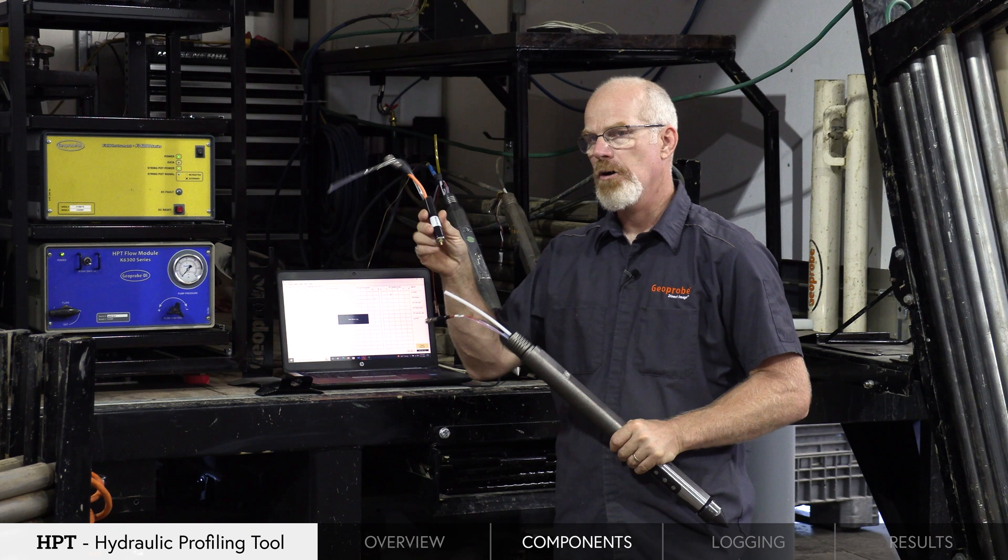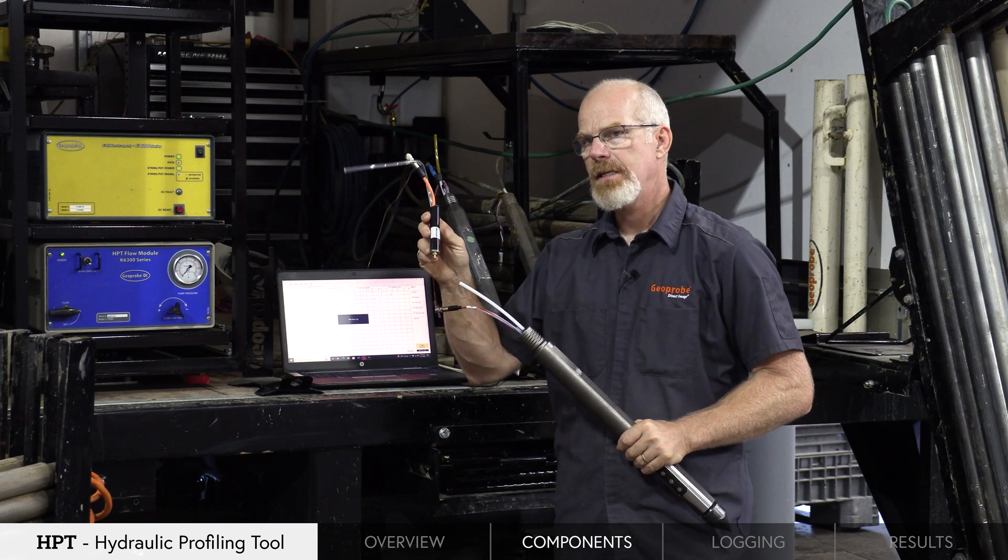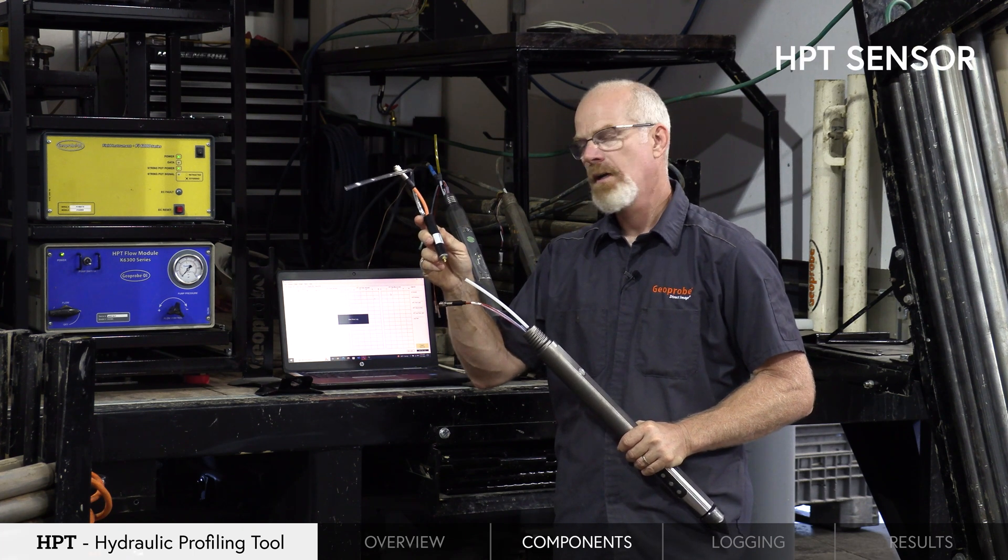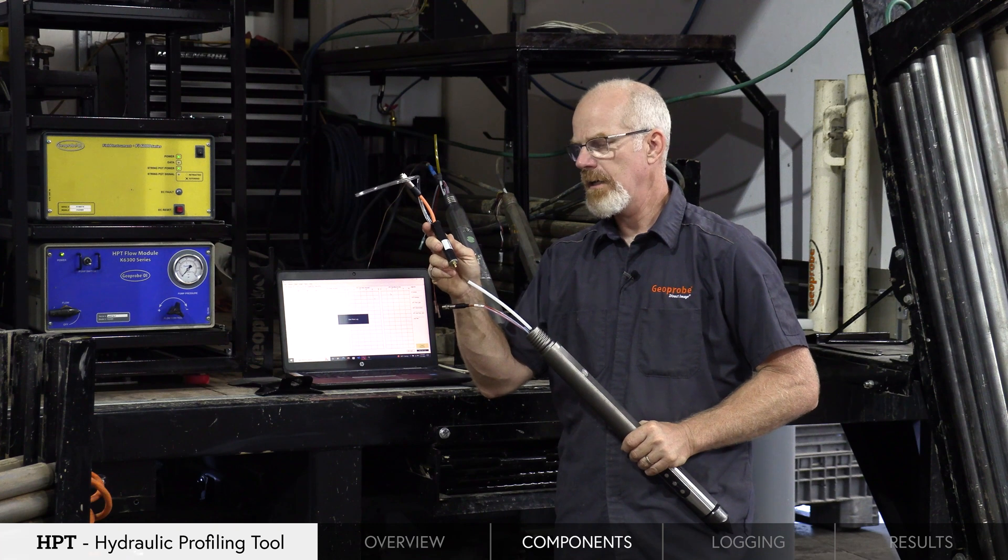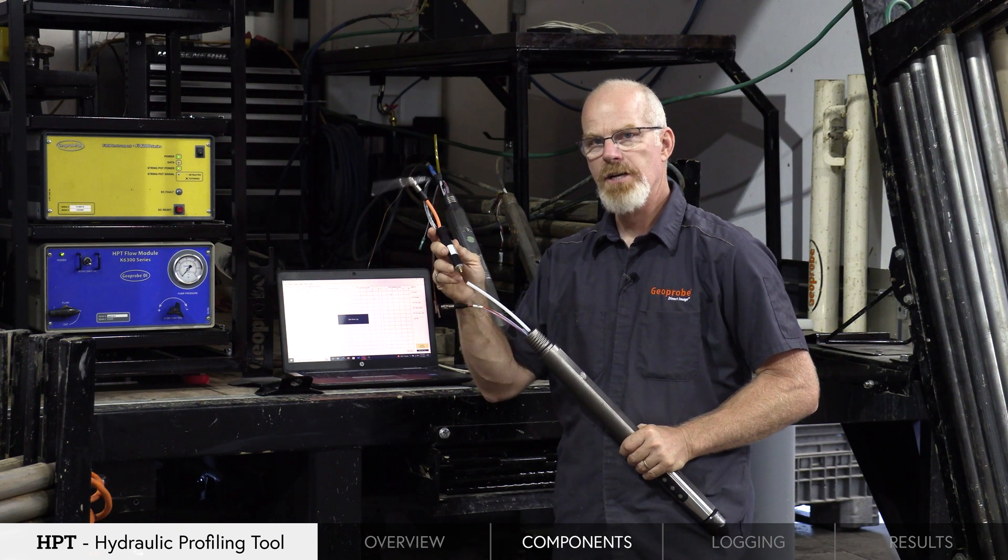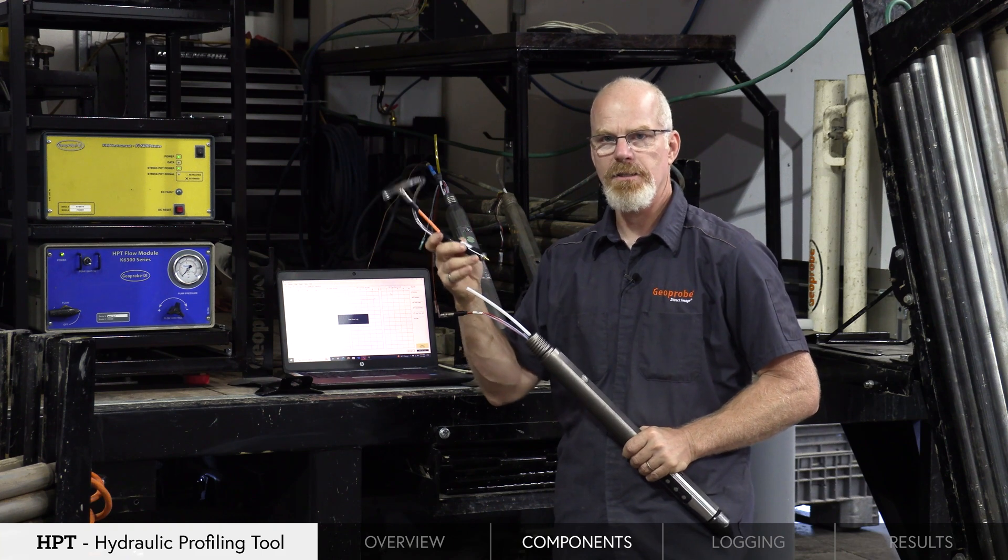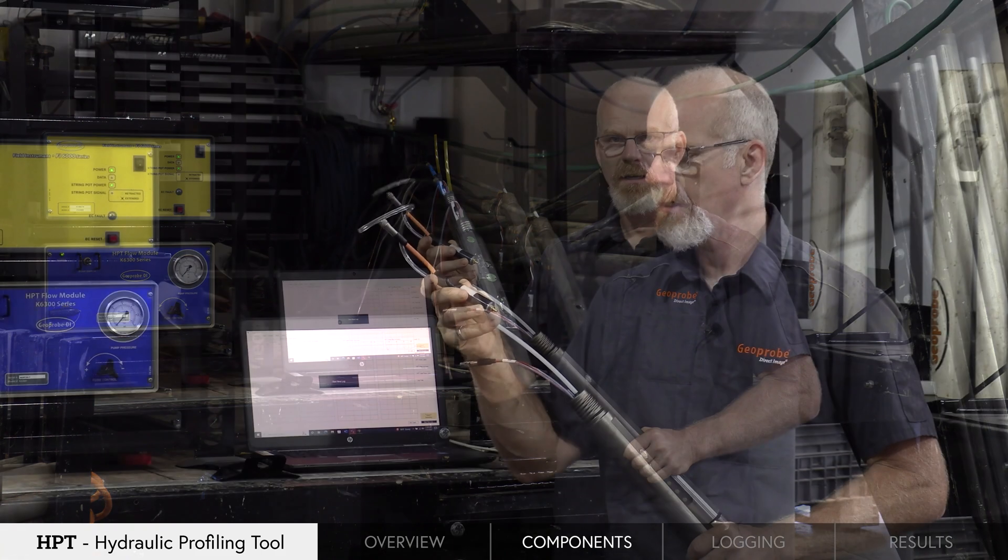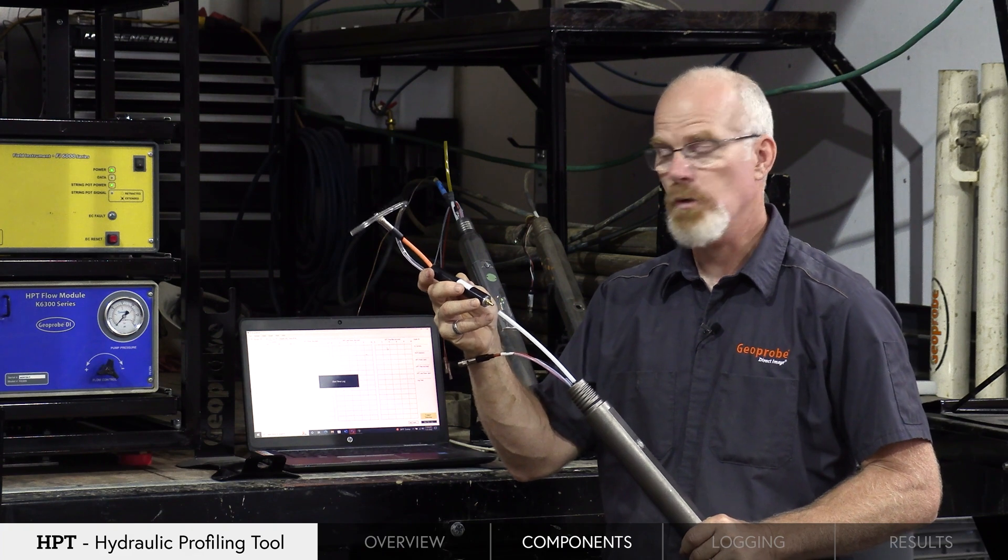Directly above the probe, we have an HPT sensor downhole. This sensor allows us to record how much pressure it's taking within the formation to inject the water that we've initially set up in the controller.